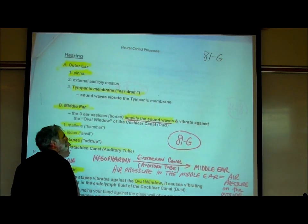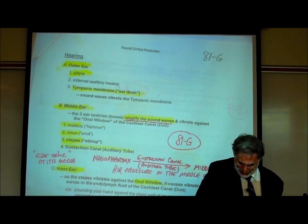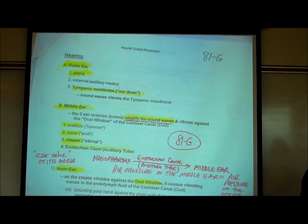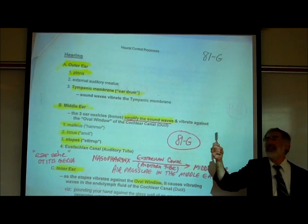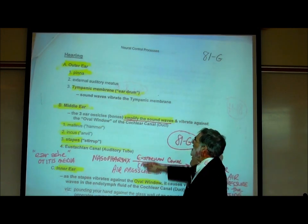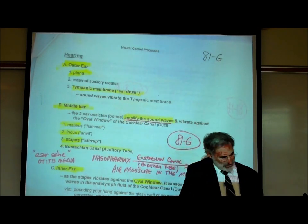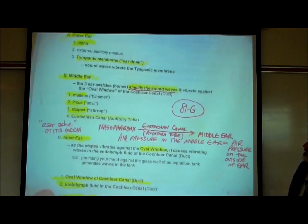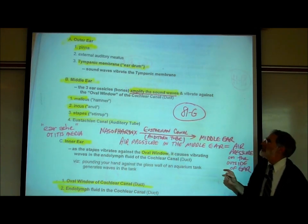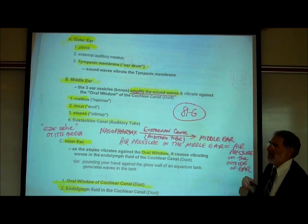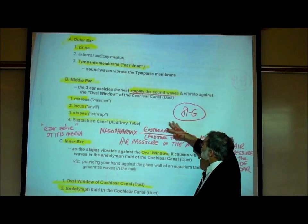Sound waves — what we call sound — are vibrating air molecules. These sound waves vibrate against our eardrum or tympanic membrane. In the middle ear are those three ear ossicles or bones. The purpose of those three bones is to amplify the sound waves — to make them louder, to make them vibrate more.